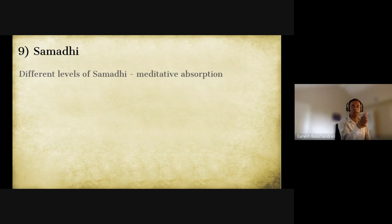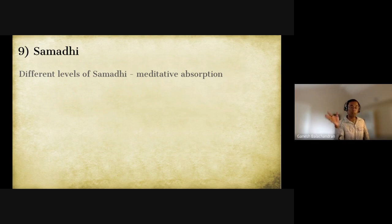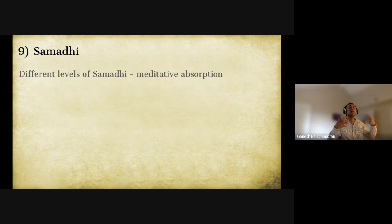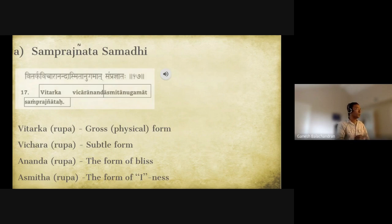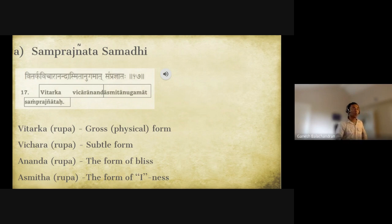In the second stage called dhyana, the mind is able to seamlessly rest on the object — it can be a breath or a sensation in the body. In the third state, samadhi, you get absorbed in yourself. The analogy is sitting in a hot tub where your body feels like melting and your mind is calm — that is meditative absorption, but here it comes from internally. Patanjali talks about two types of samadhi broadly: samprajnata samadhi and asamprajnata samadhi.